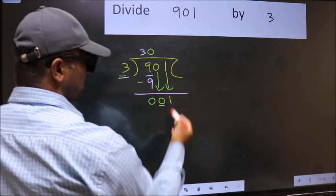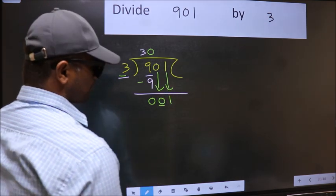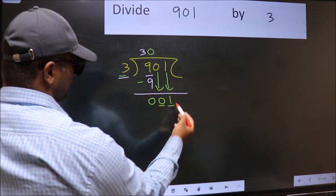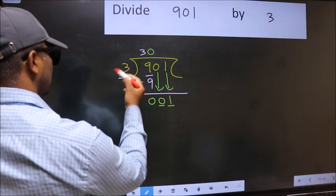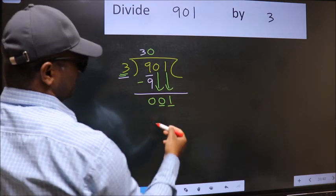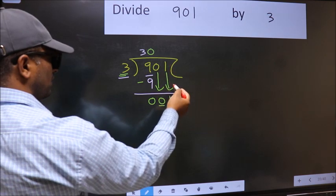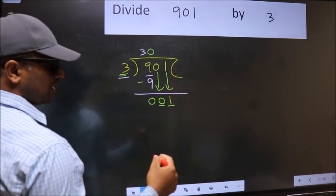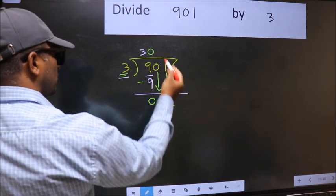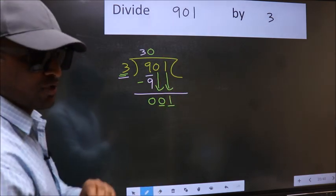After this step, the mistake happens and the mistake is this. Here we have 1 and here 3. 1 is smaller than 3, and we don't have any more numbers to bring it down. So what many do is they directly put dot and take 0, which is wrong.